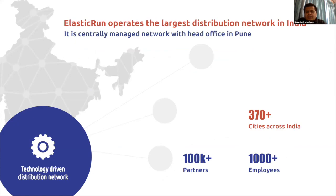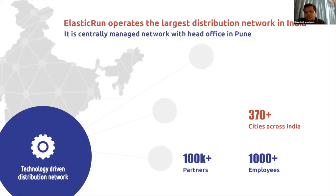We are spread across more than 370 plus cities — across tier 1, tier 2, and tier 3 cities in India — all managed centrally via our Pune head office through technology. We have around 100,000 plus partners helping us with manpower requirements, transportation requirements, and warehouse and station management. We are managing the end-to-end lifecycle of this distribution.